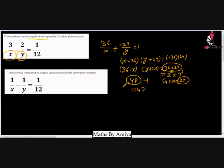There are 47 integral solutions of x and y for 3/x minus 2/y equal to 1/12. You can either use the formula or work from the concept — but remembering all the formulae is not an easy task, so it is better to understand the concept and solve the question.